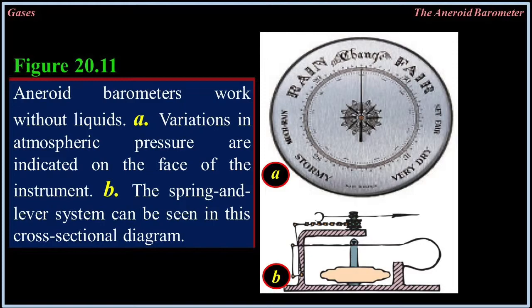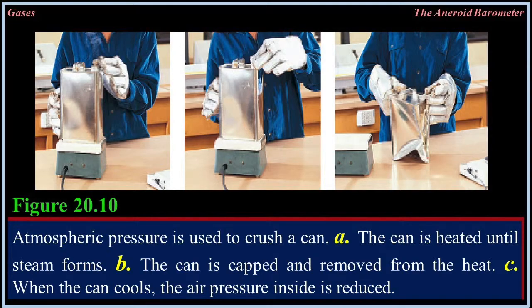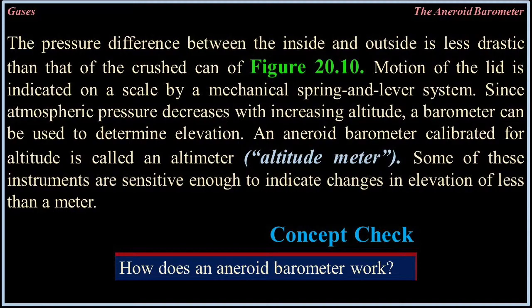Figure 20.11: Aneroid barometers work without liquids. A) Variations in atmospheric pressure are indicated on the face of the instrument. B) The spring and lever system can be seen in this cross-sectional diagram. The pressure difference between the inside and outside is less drastic than that of a crushed can. Motion of the lid is indicated on a scale by a mechanical spring and lever system. Since atmospheric pressure decreases with increasing altitude, a barometer can be used to determine elevation. An aneroid barometer calibrated for altitude is called an altimeter — some instruments are sensitive enough to indicate changes in elevation of less than a meter. Concept check: How does an aneroid barometer work?